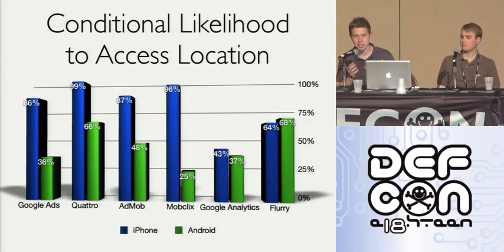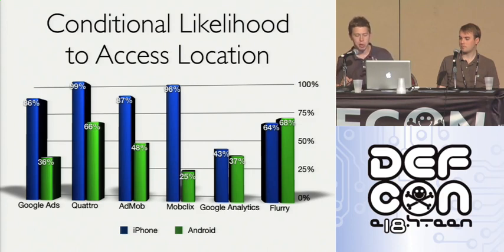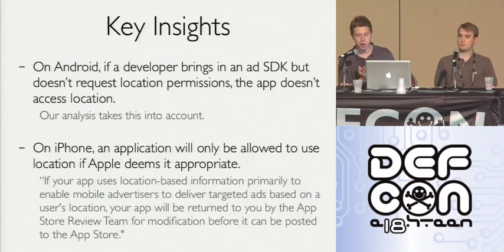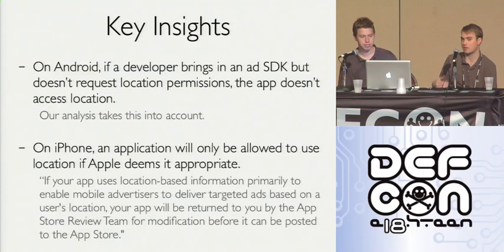We tried to zoom out and said: almost every application we encounter seems to have a third-party SDK. Given an application has a third-party SDK, how likely is it to access location? We looked at the most prevalent SDKs and found a lot of them are accessing location — many of those numbers are higher than the platform average. On Android, if a developer brings in an SDK but doesn't request the location permission, we don't say the app accesses location because it can't — so Android numbers for SDK location access were lower. This is a big credit to the permission-based model on Android.